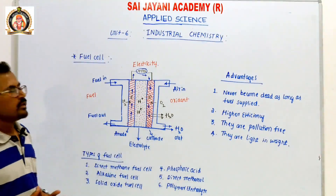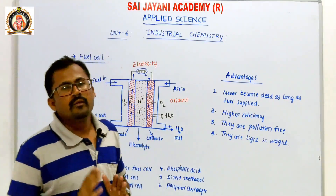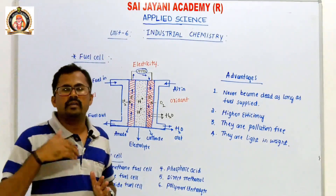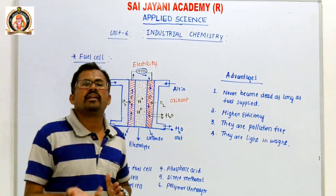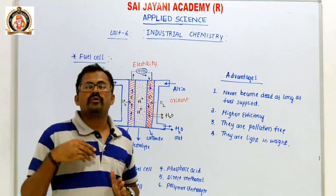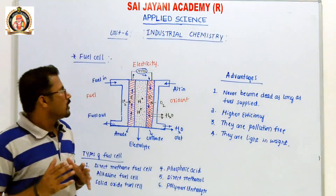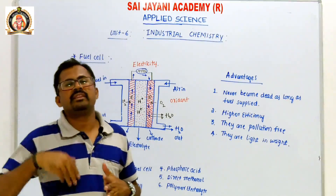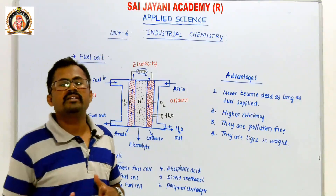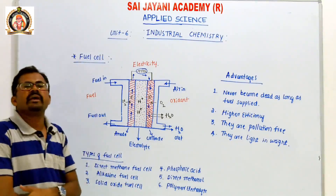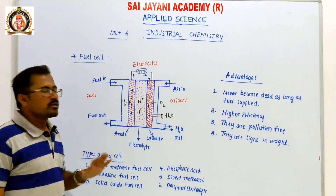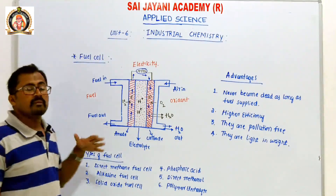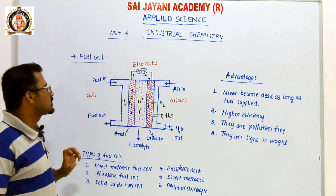To recap: a fuel cell is a device which converts chemical energy into electrical energy — chemical energy first into heat energy, then into electrical energy. The main fuels used in fuel cells are hydrogen, methane, and carbon monoxide.